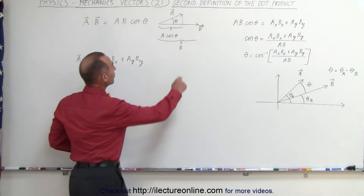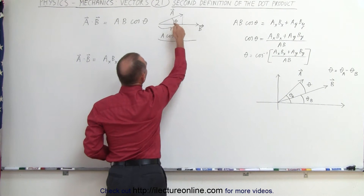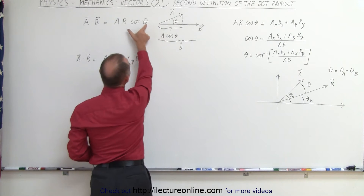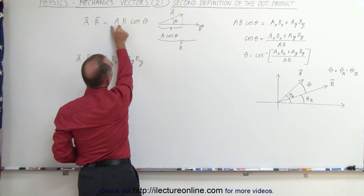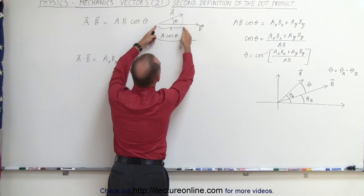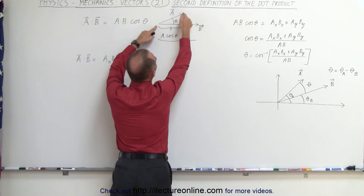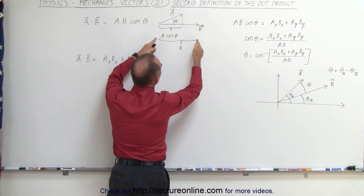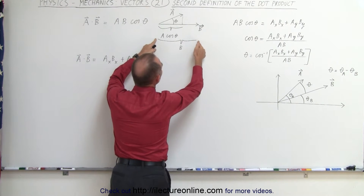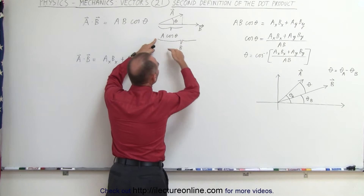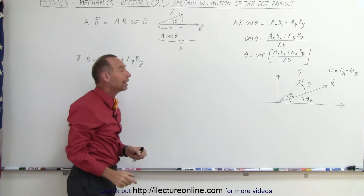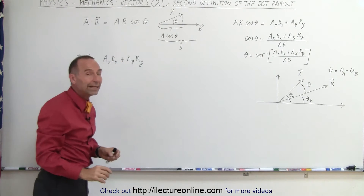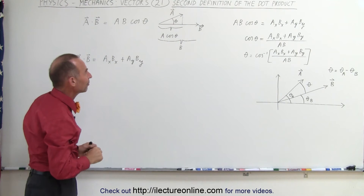Graphically, you can see here we have vector A and vector B and the angle theta between them. A times the cosine of theta — if I take this times the magnitude of A, that is equal to this length right here. It's simply the magnitude projected onto vector B. If we take A cosine theta and multiply that times the magnitude of B, this would be the result of the dot product. Simply A cosine theta times B is the dot product. Notice we get a scalar quantity for that.